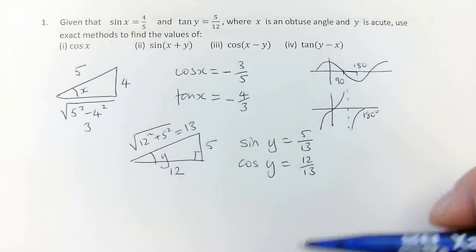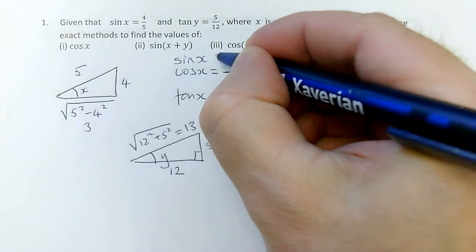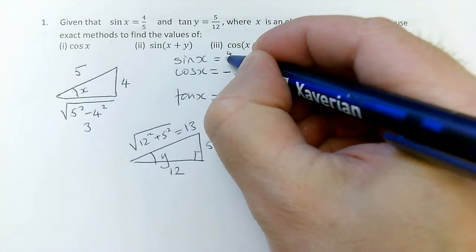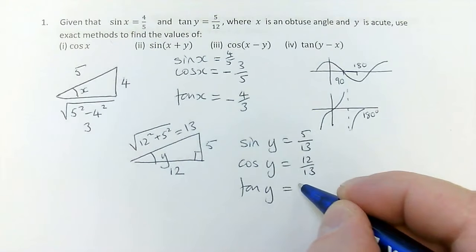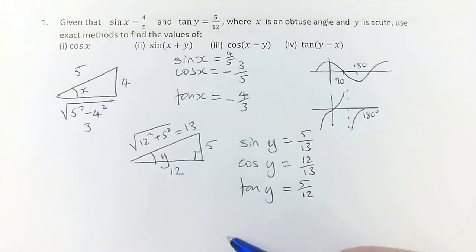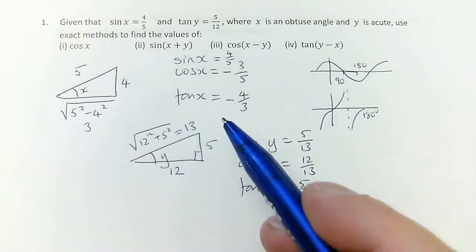So I've now set myself up with the complete set. I knew that sin of x was 4 fifths. That was given. And I knew that tan of y was 5 twelfths. That was given. And now I can get on with what the question is really about, which is finding some additions of angles.